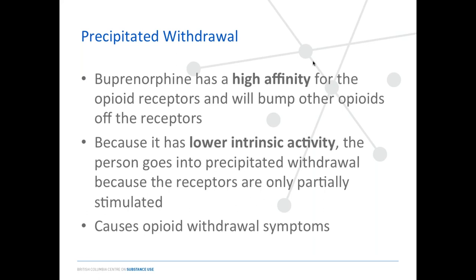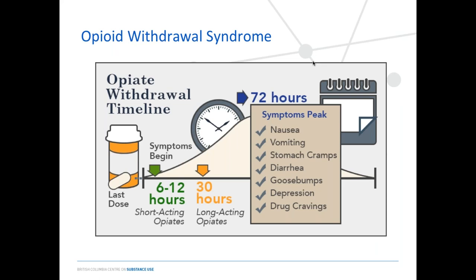Office-based induction is generally safe and straightforward, but the main barrier is the risk of precipitated withdrawal. Precipitated withdrawal happens because buprenorphine has a high affinity for the opioid receptor and bumps off other opioids. Because it has lower intrinsic activity, the person then goes into withdrawal as the receptors are only partially stimulated. Opioid withdrawal is experienced like a flu-like state: nausea, vomiting, diarrhea, cramps, piloerection, sweating, chills, decreased mood, agitation, and cravings — a very uncomfortable state.